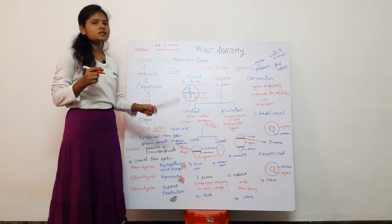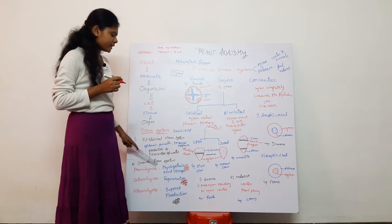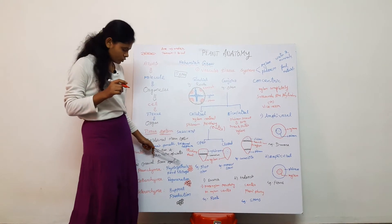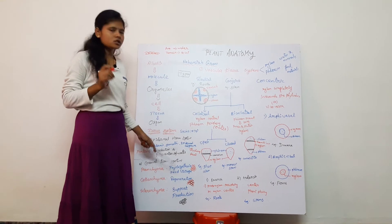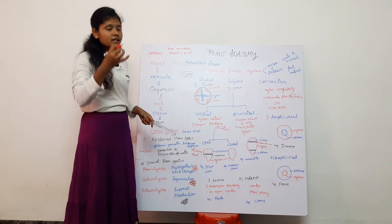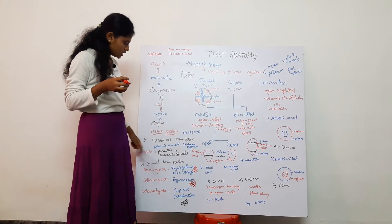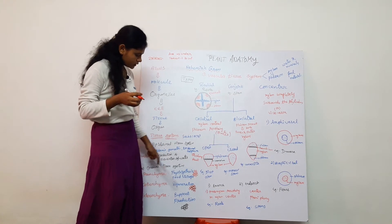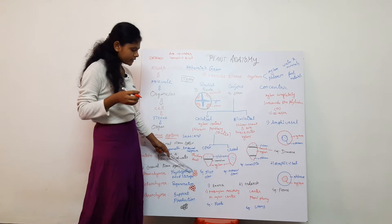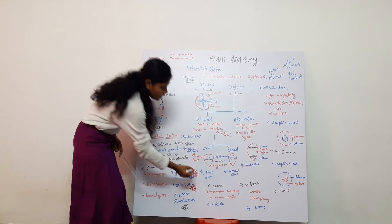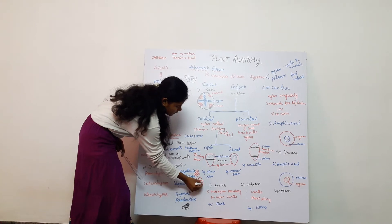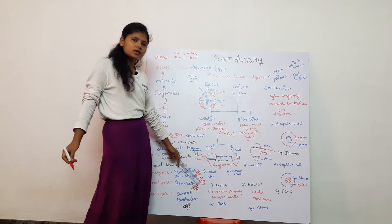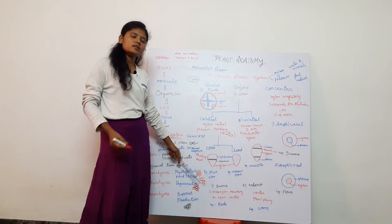Parenchyma is involved in photosynthesis. When parenchyma cells contain chloroplasts, they are called chlorenchyma. Chlorenchyma is involved in photosynthesis. It has a round shape and starch grains may be present in the center.